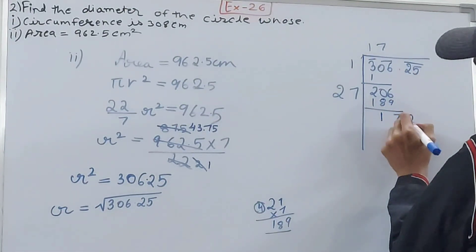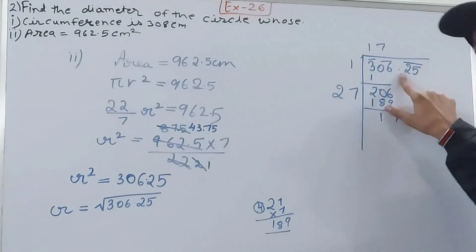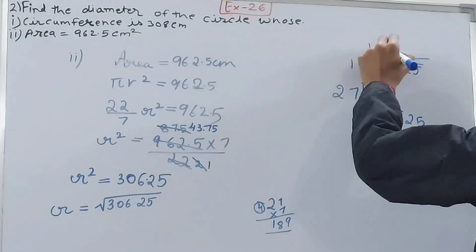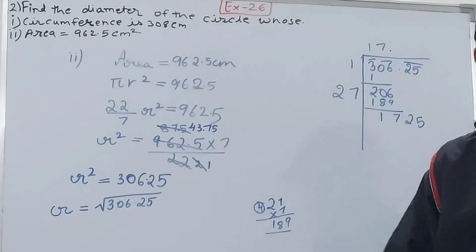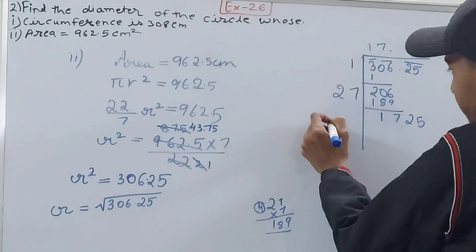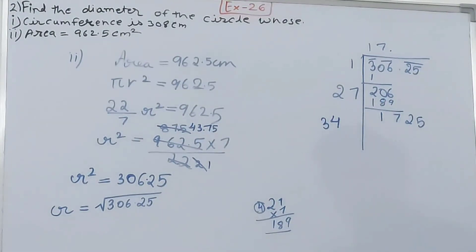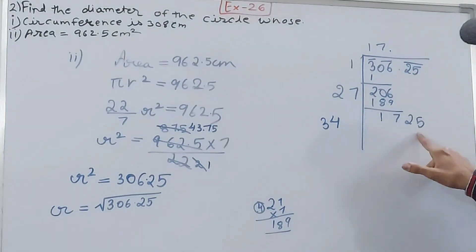In place of the blank, I can put 5 and 5 here. Double of 17 is 34, and now 1725.